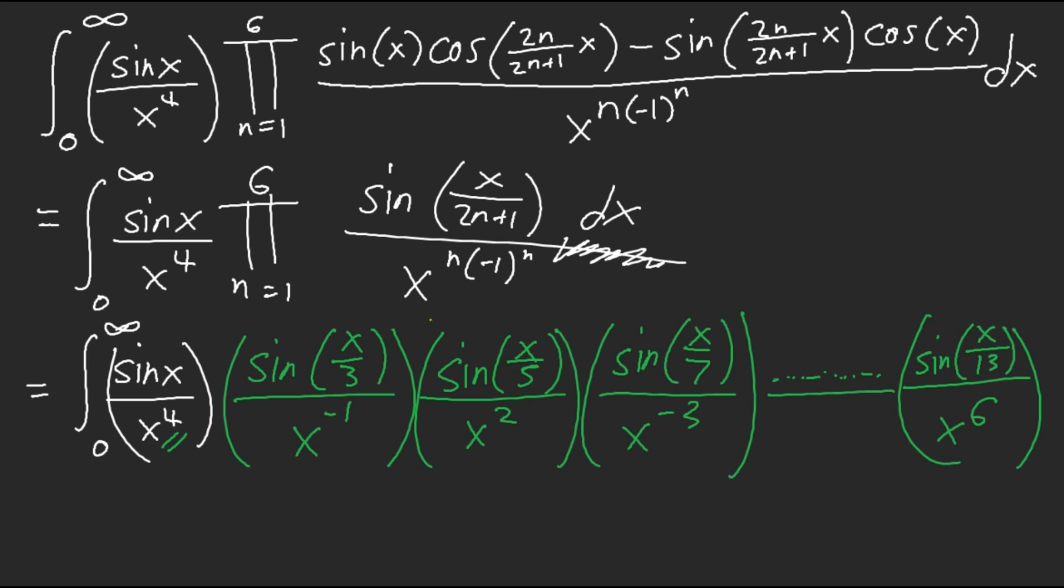But, does it actually add up? So, we have 2, minus 1, plus 4, minus 3, plus 6, wait. 2, negative 3, 4, then I need negative 5, 6. So, this adds up to 3. Plus 4, 7. Yeah. So, this does add up becoming a Borewine integral. So, what we have now, is that we end up having sine of x, sine of x over 3, all the way to sine over x over 13, x to the power of 7, exactly what we need.